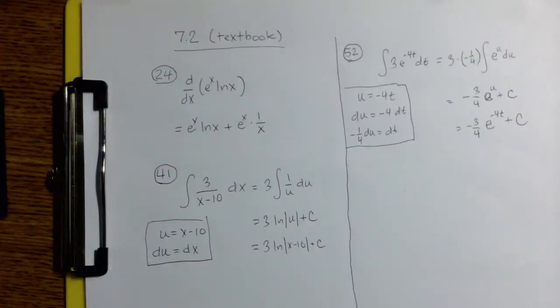In section 7.2, we learn some rules associated with the natural logarithm and the natural exponential function, so e to the x and ln x. These rules come in the form of both derivative rules and antiderivative rules. We're given both in this section.